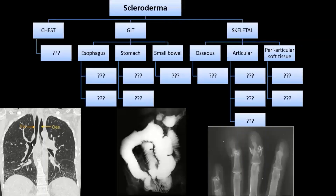What's your name? Manifestation of scleroderma. You can't interpret interstitial lung disease. What's your name? Megaesophagus. Dilation.